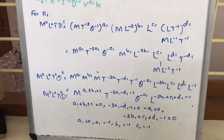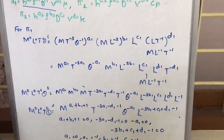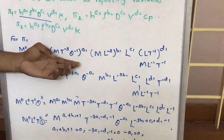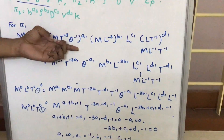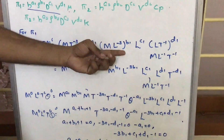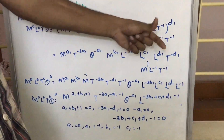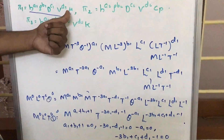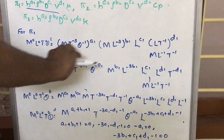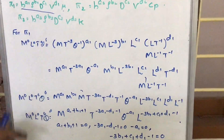The power is 0 because it is a non-dimensional quantity. For H, instead of H, we represent it by its dimensions: M T raised to minus 3 theta raised to minus 1, all raised to A1. Similarly, rho is M L raised to minus 3, raised to B1. D is L, so L raised to C1. V is L T inverse, raised to D1. And mu is M L inverse T inverse. So we have rewritten this step using the fundamental dimensions.